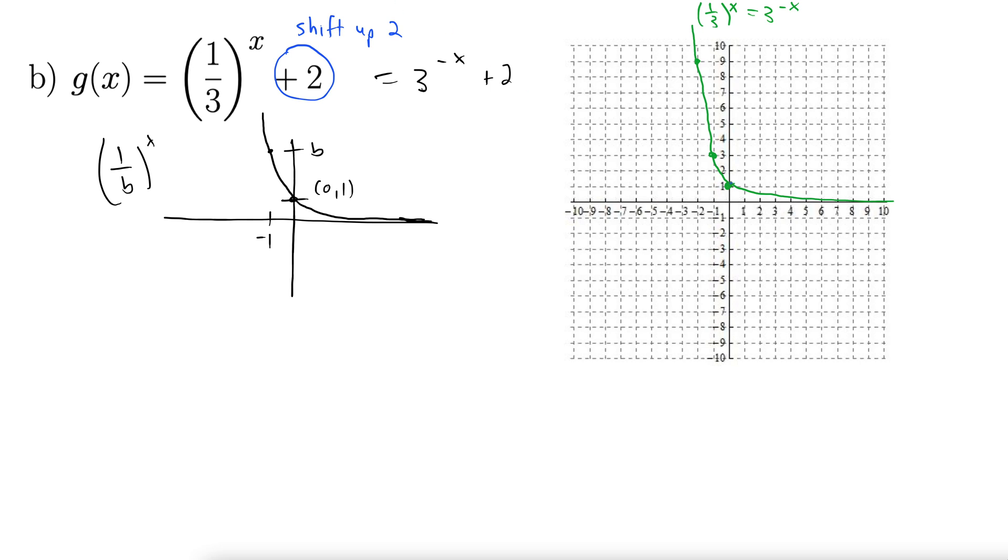And then here we're going to shift it up by 2. So all these points are going to go up 2. So this 1 goes up to 3. 3 goes up to 5. And 9 goes up to 11. And also, this has an asymptote here along the x-axis. The green one does. So that's also going to get shifted up by 2. And that's one of the most important things you can do to graph these, is shift the asymptote along with it. Because then we have a really nice guideline of where to graph it. You can see we connect these points. It comes down like so, and then levels off along this asymptote. So there's our final answer. This blue one here is 1 third to the x plus 2.